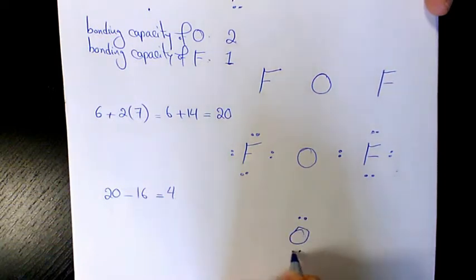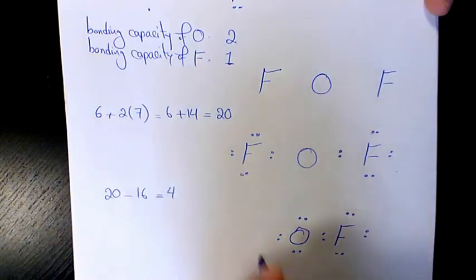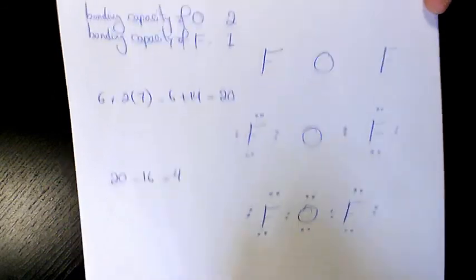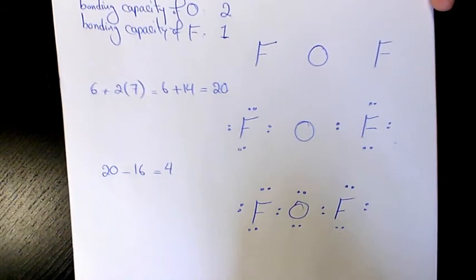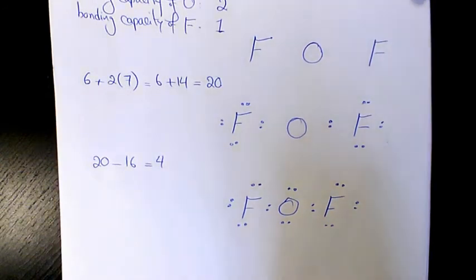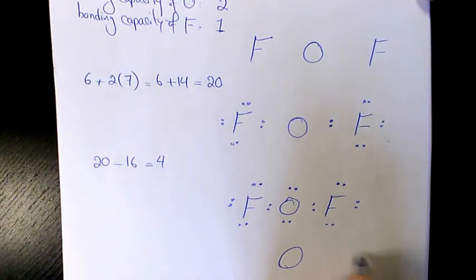So now we don't have any valence electrons left. What we need to do is check if we have octets for all these elements. Two, four, six, eight for fluorine - good. Two, four, six, eight for oxygen - we are good. Two, four, six, eight for fluorine - we are good.